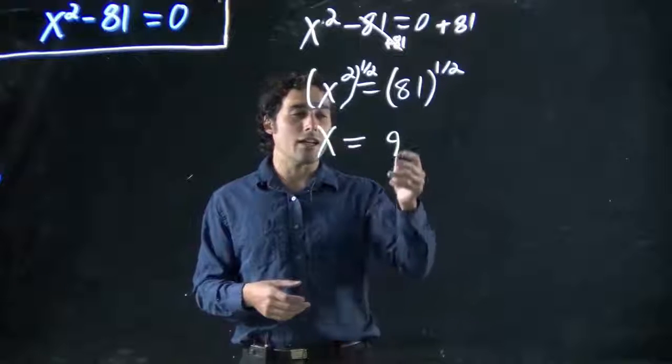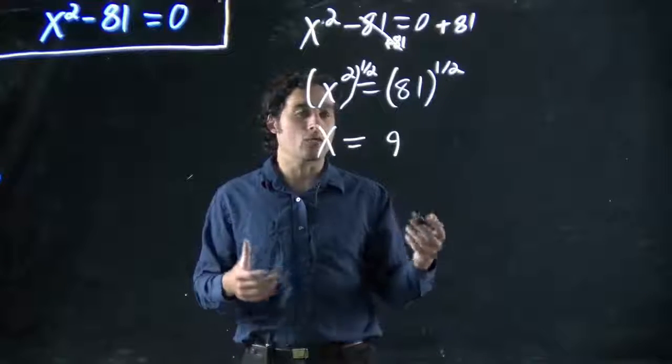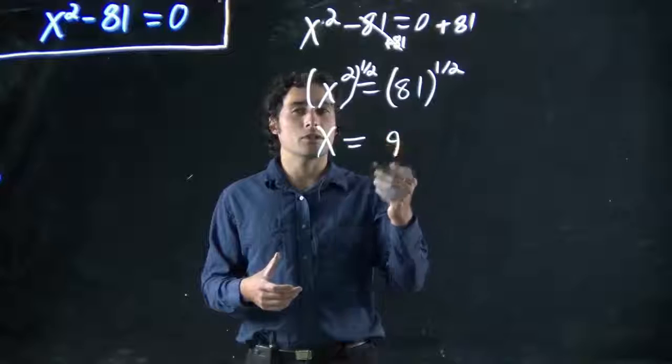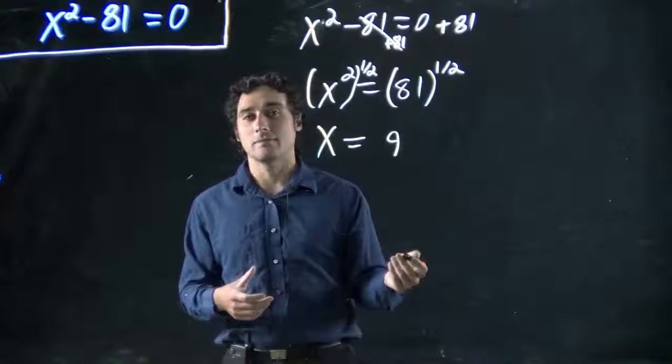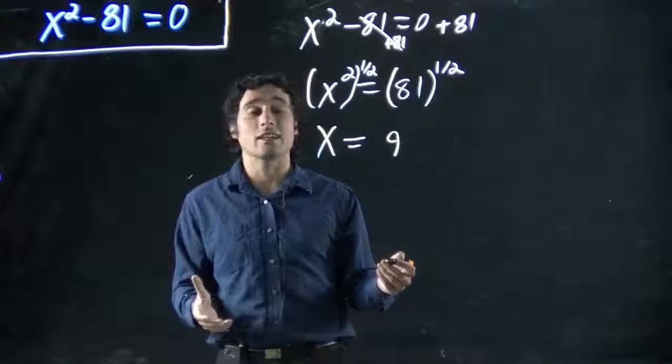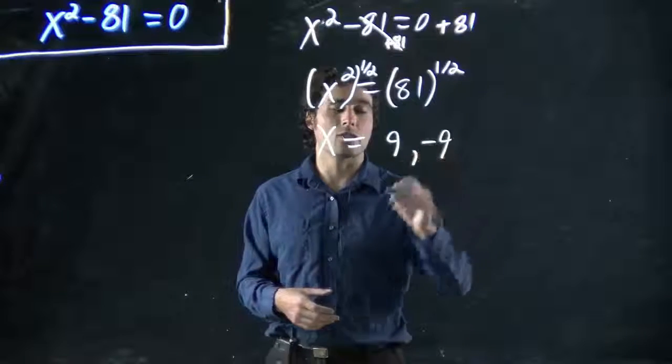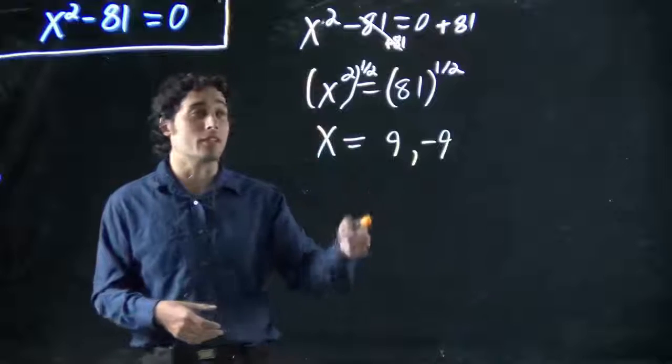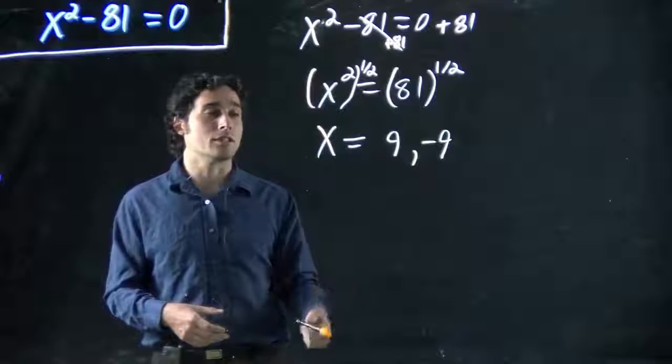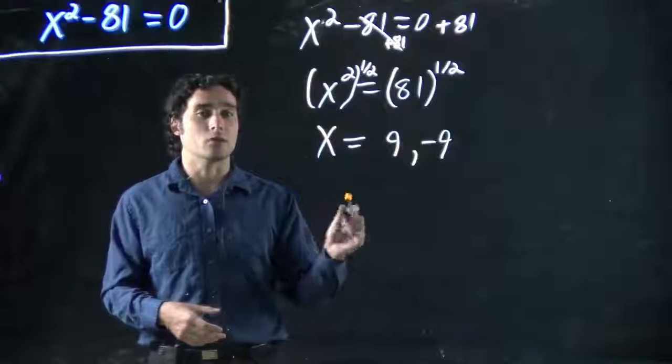But the thing is, 9 to the power of 2, or 9 squared, is 81. But so is minus 9. Minus 9 times minus 9 is 81 as well. So in this case, there's actually two solutions. Something we might not be used to, but something we've got to watch for. These kind of problems have two solutions because both the minus and the plus will work.